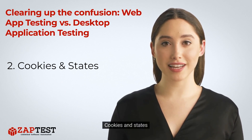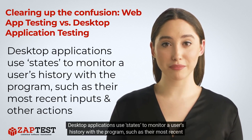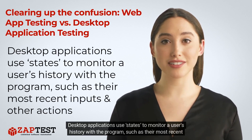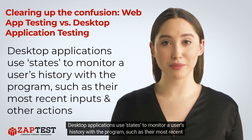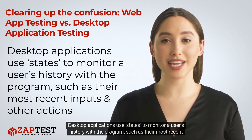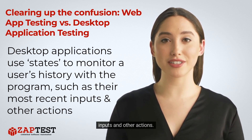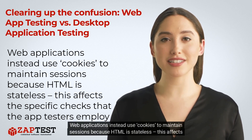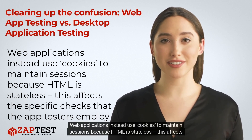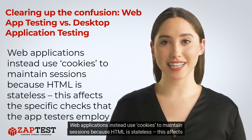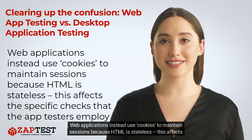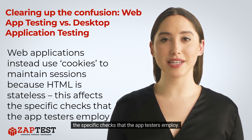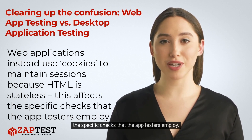2. Cookies and states. Desktop applications use states to monitor a user's history with the program, such as their most recent inputs and other actions. Web applications instead use cookies to maintain sessions because HTML is stateless. This affects the specific checks that app testers employ.